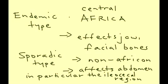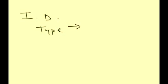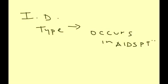The third type of Burkitt's lymphoma is known as the immunodeficient type, and what that really refers to is the type of Burkitt's lymphoma that occurs in AIDS patients. So those are the three types of Burkitt's.